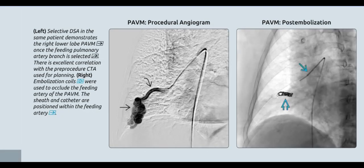Selective DSA in the same patient demonstrates the right lower lobe PAVM. Once the feeding pulmonary artery branch is selected, there is excellent correlation with the procedure CTA used for planning. Embolization coils were used to occlude the feeding artery of the PAVM. The sheath and catheter are positioned within the feeding artery.